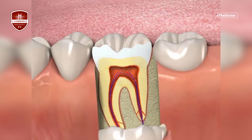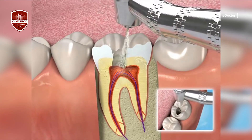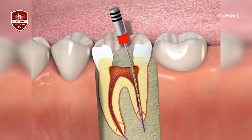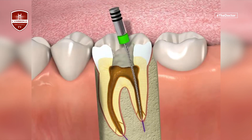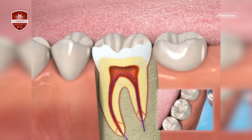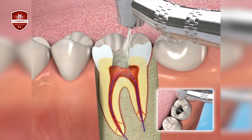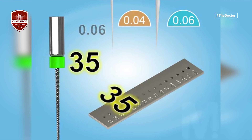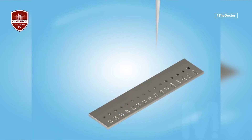There are two ways to measure canal length. The first is using an X-ray: after opening the tooth, I place a small file — the smallest size — inside the canal, then take an X-ray to confirm I've reached the full length. The second method is using a device called the apex locator, which I place inside the root canal and it gives me a reading on screen showing whether I've reached the apex.